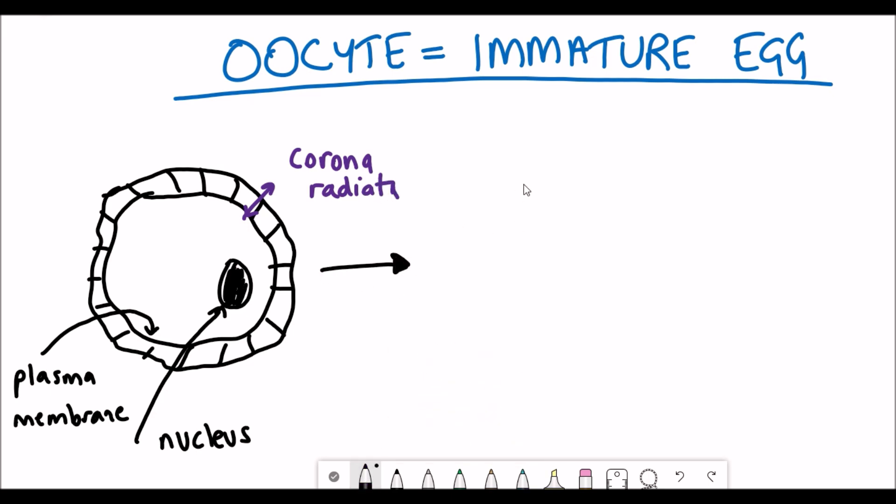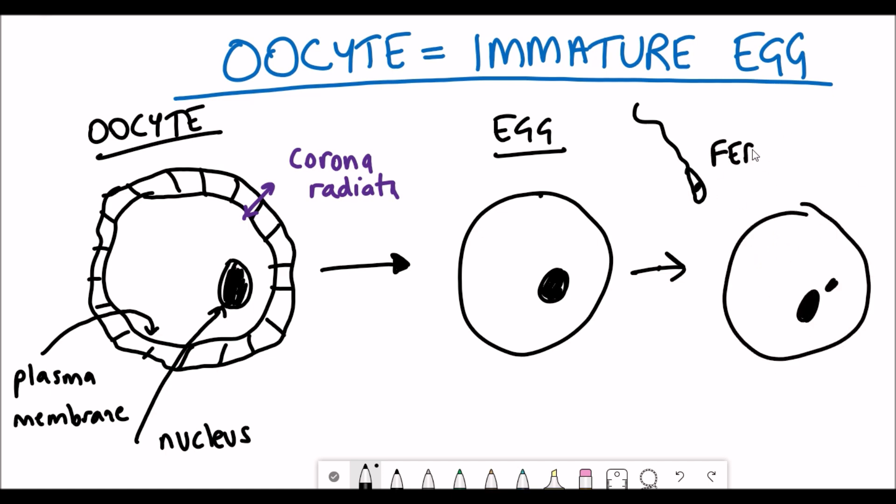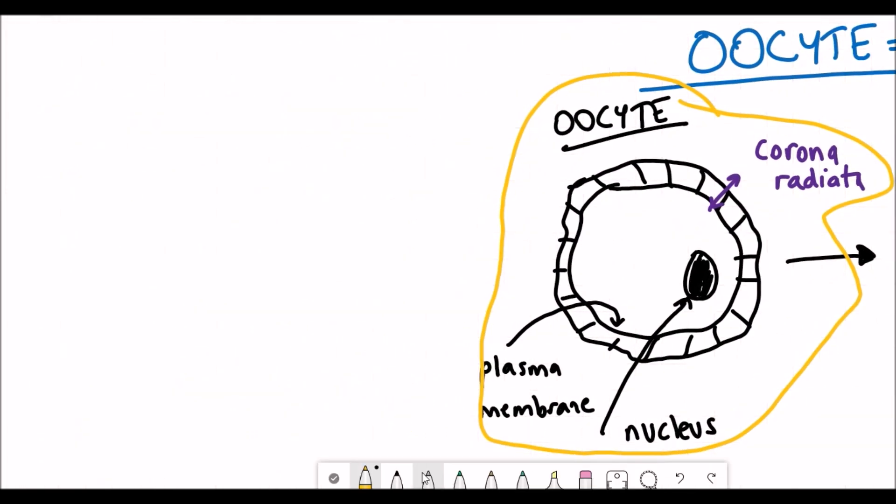These oocytes mature into eggs, and then the egg gets fertilized by sperm, and you get a zygote and then an early embryo. The quality of these oocytes declines as you age in females.